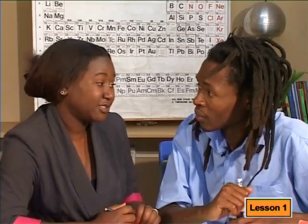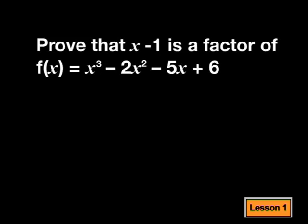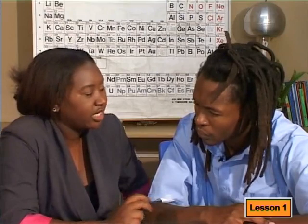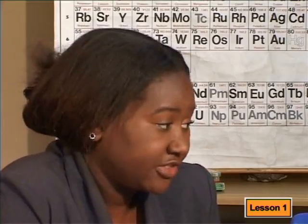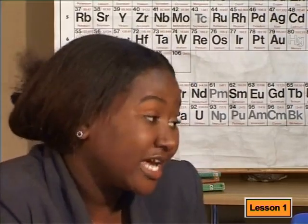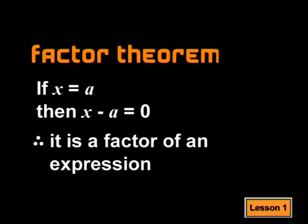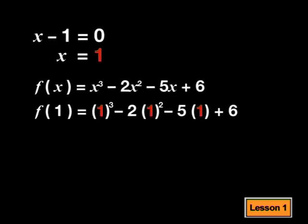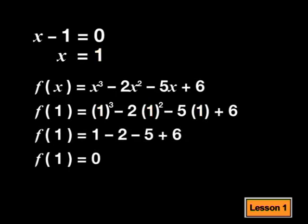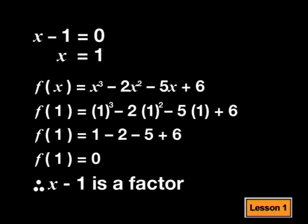Are you ready to put the Factor Theorem into practice? I'm ready to give it a try. In order for x minus 1 to be a factor, it must go into the expression exactly — according to the Factor Theorem, substituting the x value should give an answer of 0. If x minus 1 is a factor, then x must equal 1. Substituting into the expression and simplifying, I get f of 1 equals 0, which tells us that x minus 1 is a factor of the polynomial since it goes into the expression exactly without a remainder.